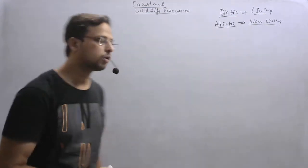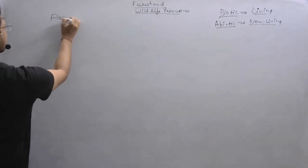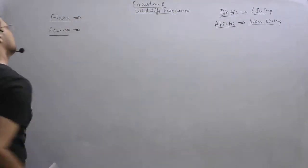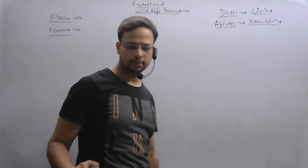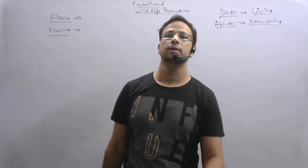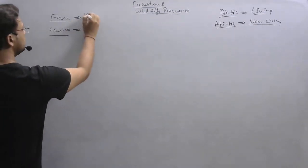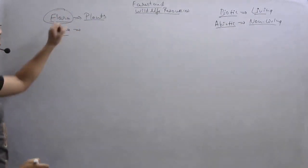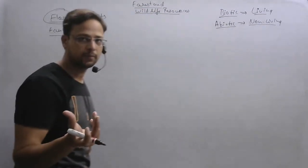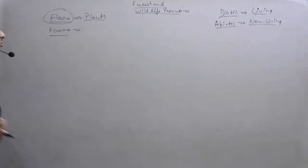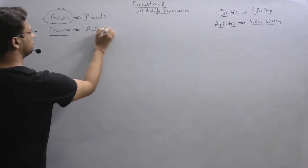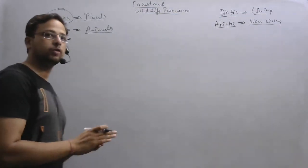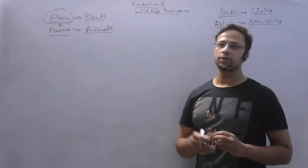Now let us discuss flora and fauna. Flora refers to the plant kingdom — you can remember it because 'flora' sounds like 'flower'. Fauna refers to the animals. These two terms are always used together: flora and fauna, both of which are found in the forest.